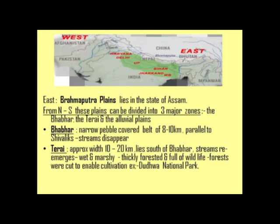In the Tarai belt, big pebbles, stones, dirt, sand, silt, and other materials are deposited. This belt is generally wet and marshy and has a big jungle — it is full of wildlife. Parts of this belt have been cleared for cultivation. One of the best examples of wildlife sanctuaries here is Dudhwa National Park.